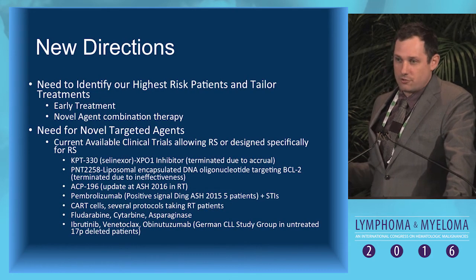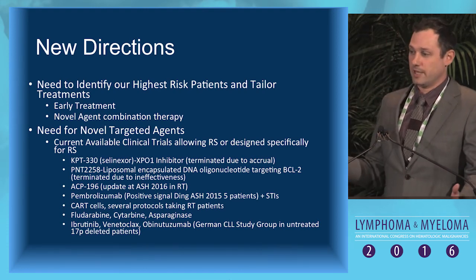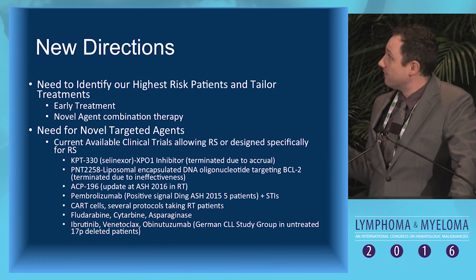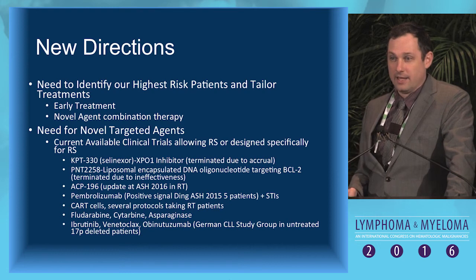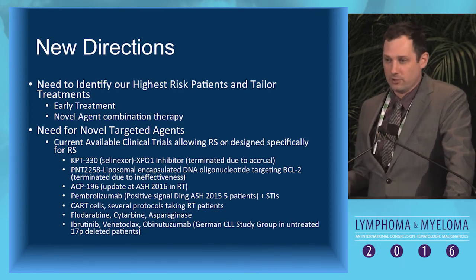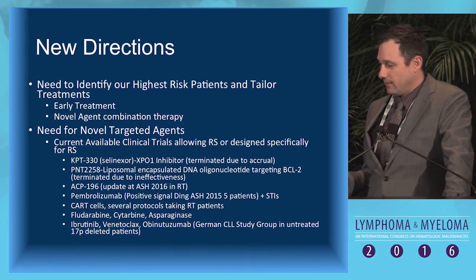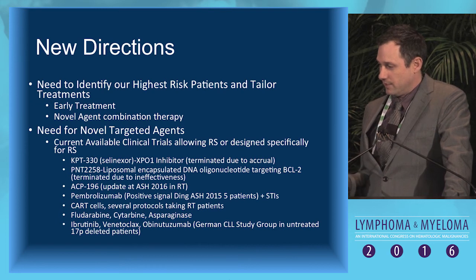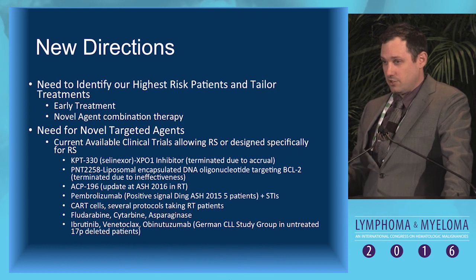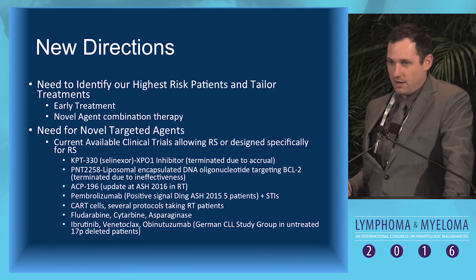The new direction: the best way to treat Richter's is currently to prevent it. Can we identify the highest-risk patients and come up with a treatment that can intervene early, perhaps even outside current guidelines? These are trial questions, but they may be the only ways to impact this disease. Novel agents are needed — we need to start targeting the underlying biology.